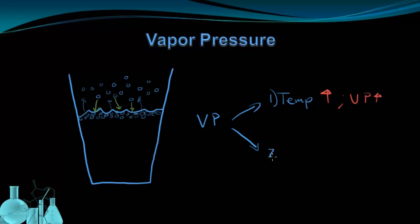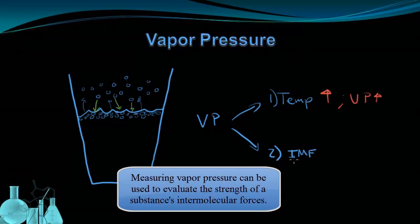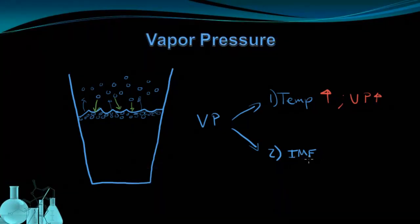The second factor that can affect vapor pressure is intermolecular forces. And in fact, you can use a measurement of vapor pressure to evaluate the intermolecular forces of a given substance. Let's think about what the effect of intermolecular forces would have on vapor pressure. Intermolecular forces hold molecules together. So a substance with a high intermolecular force of attraction, that substance would have a harder time letting molecules escape. And that would result in a lower number of vapor molecules right above the liquid. So if intermolecular forces are high, then the vapor pressure is going to be low.